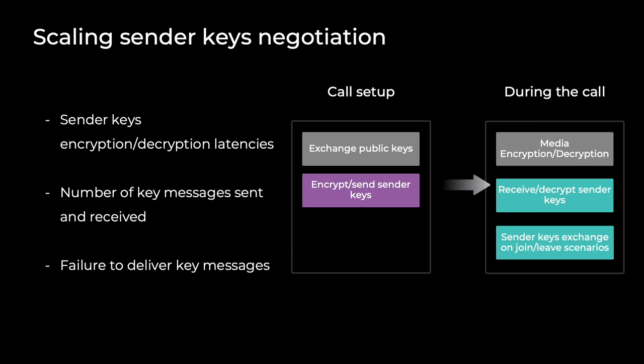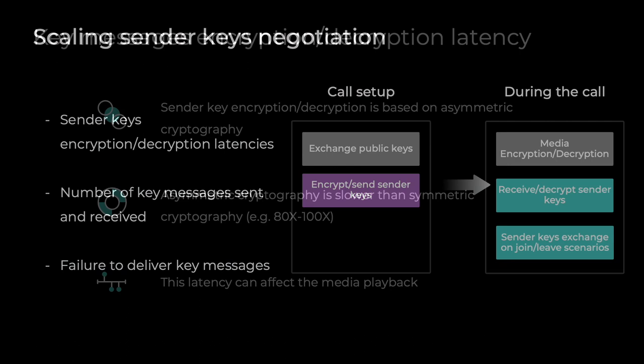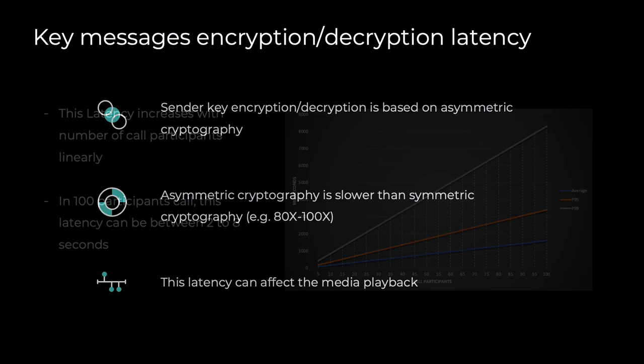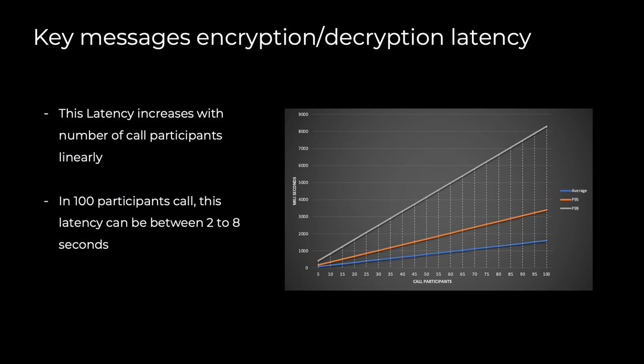Sender key negotiation is one of the most challenging aspects of end-to-end encryption and scaling for large calls. There are a few considerations: the sender key encryption and decryption latency and how it affects the call; the number of key messages sent and received; and handling failures to deliver sender keys. Sender key encryption and decryption can be based on asymmetric cryptography, which is slower than symmetric cryptography. This latency can affect media playback throughout the call, causing decryption failures which result in video and audio gaps. This latency increases linearly with the number of participants — in a 100-participant call, it can be between 2 to 8 seconds.